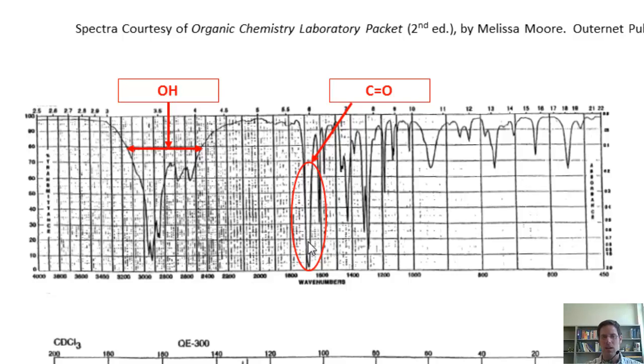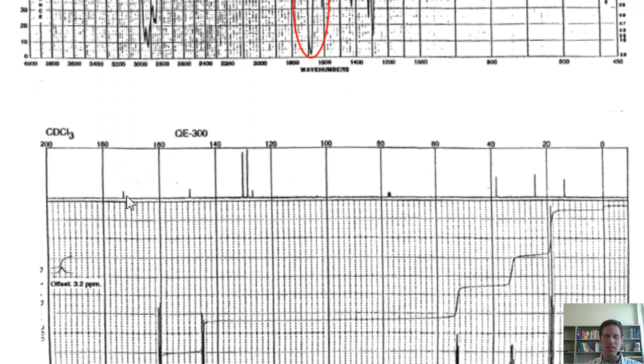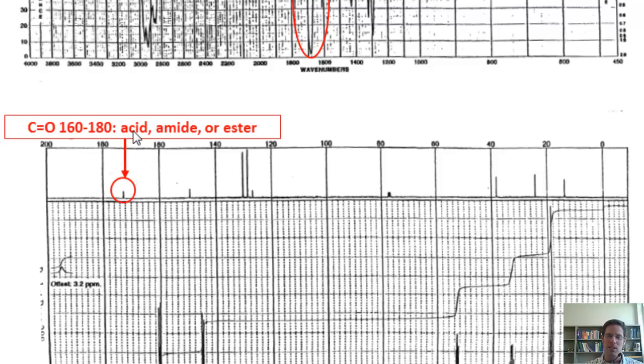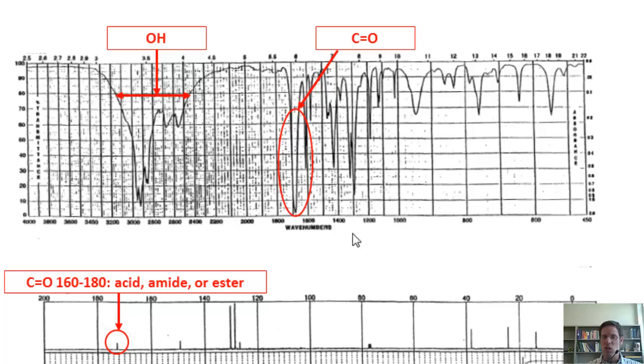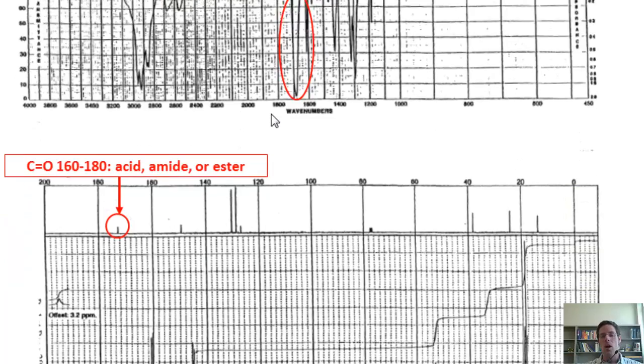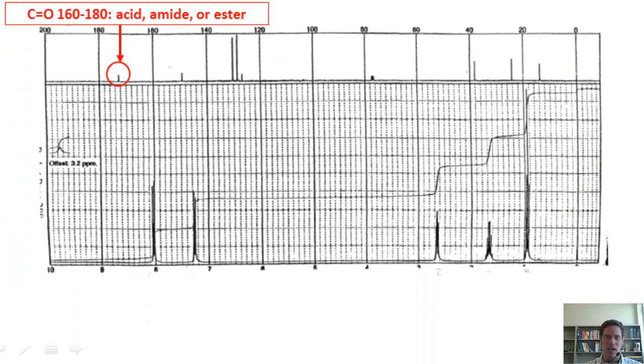Now that I know I do have a carbonyl, I'm going to look at my carbon NMR and see where that appears. It's always the leftmost signal. The leftmost signal does indeed appear between 160 and 180, which tells me it has to be a carboxylic acid, an amide, or an ester. Once again, I can pretty well deduce from my IR that it is a carboxylic acid, so I don't really have to worry about amide or ester. Let's go on to our hydrogen NMR.